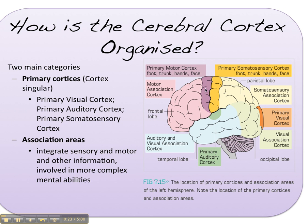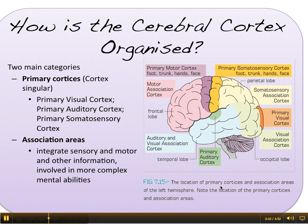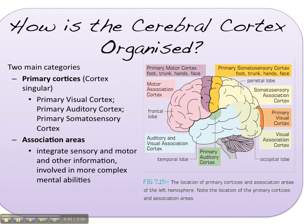Now we also have what's called the primary motor cortex, and it's in purple here. Rather than receiving information from the senses, it actually transmits messages to the motors — to our voluntary skeletal muscles. So if you decided that you wanted to move your hand and scratch your nose, your primary motor cortex would help you coordinate those movements.